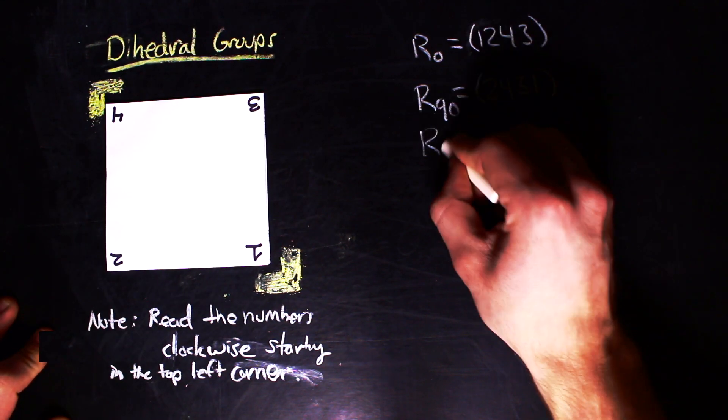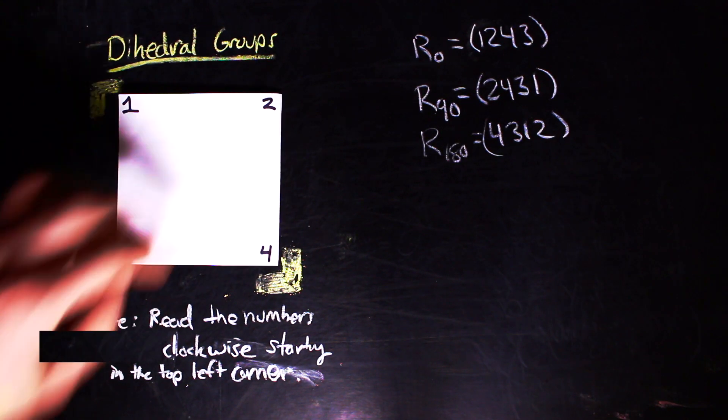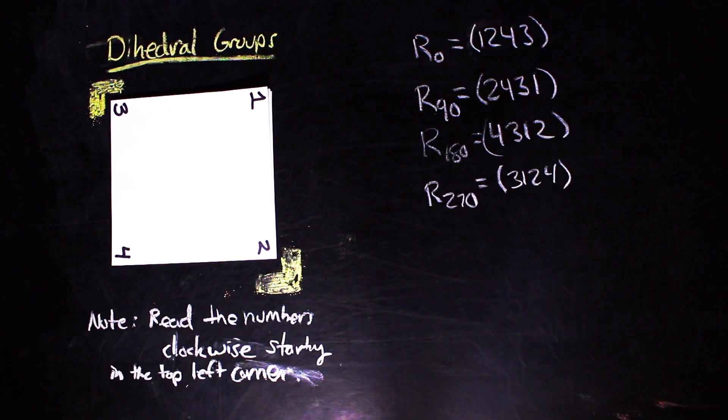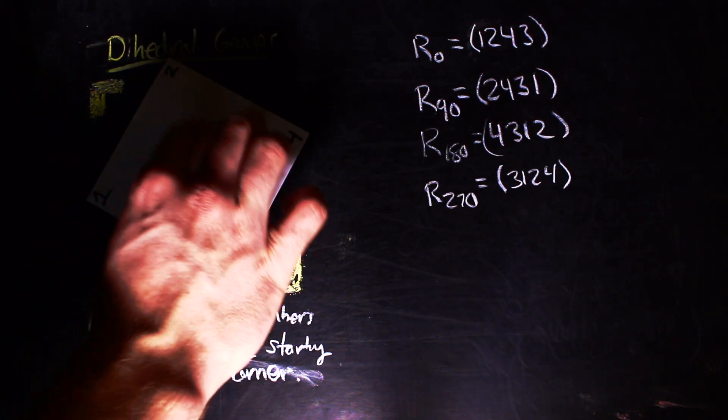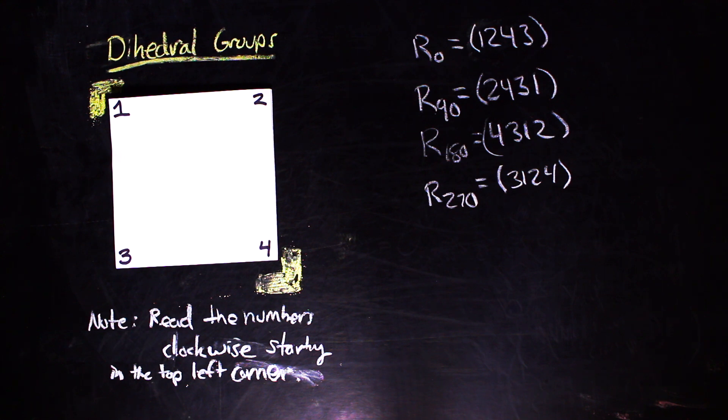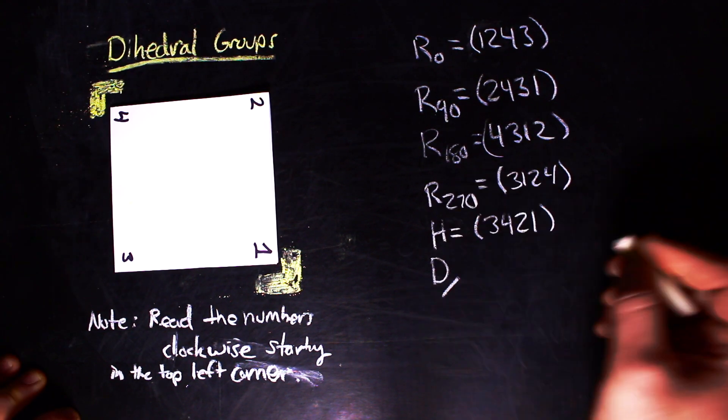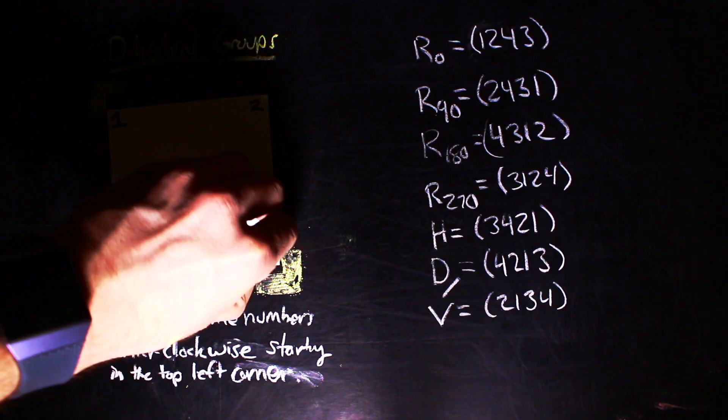You should get eight different strings of numbers, each associated with eight different movements of the square. You can do nothing to the square. You can rotate it 90 degrees, 180 degrees or 270 degrees. Notice that rotating 360 degrees is just the same as not rotating at all.